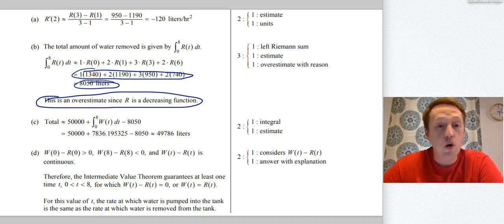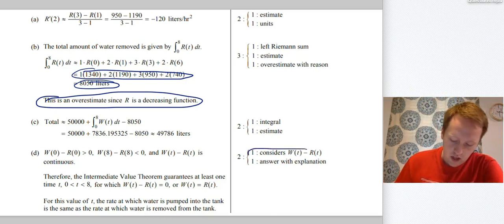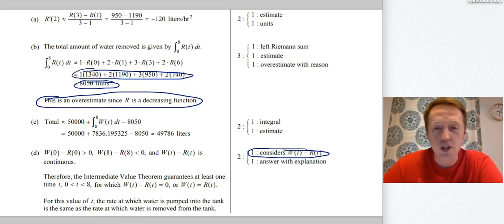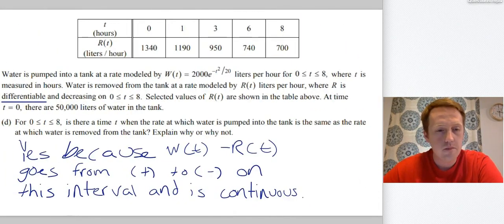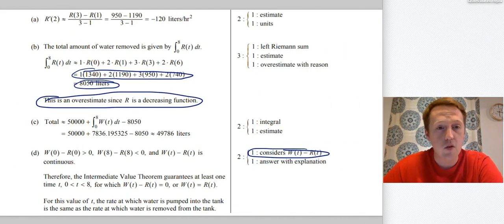Part C, an estimate of the total amount of water at time T equals eight. You got a point for setting up the integral and you got a point for the actual answer. Part D was that tricky one where we wanted to know did W and R ever equal each other? So we got a point for considering that W of T minus R of T. We got a point just for thinking about that essentially. And then we got a point with the answer. In their explanation, they specifically mentioned the intermediate value theorem. You don't have to. Okay, that's it. That's our table question.